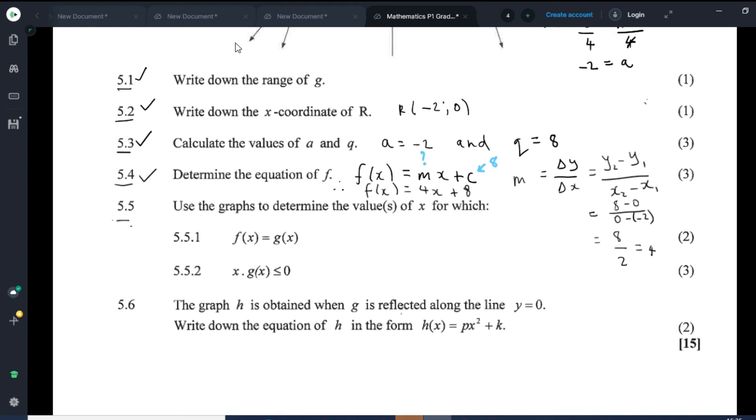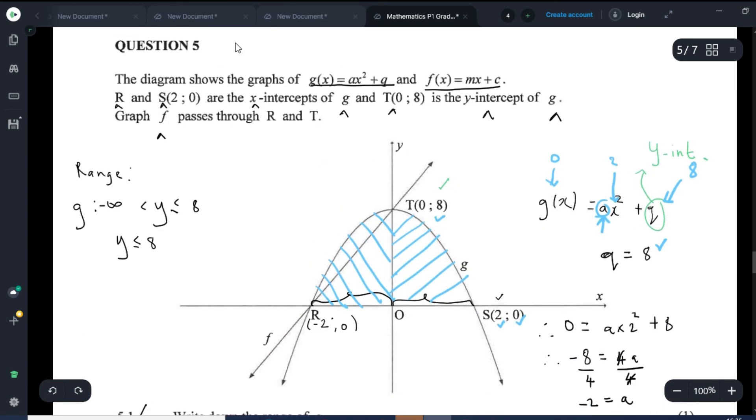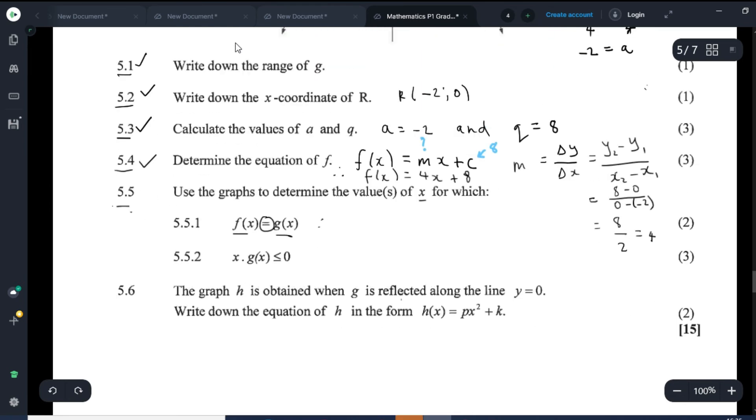Now let's have a look at 5.5. Let's find values for which F of X and G of X are equal where they intersect. In other words, where the two functions intersect, where they cross each other. So I'm going to use blue. There's a point there. That's where they intersect. And the second point is by R. So T and R is where the two functions intersect. So X should be 0 and X should be minus 2. Those are your answers. Therefore, X equals 0 or X equals negative 2. It was very straightforward.